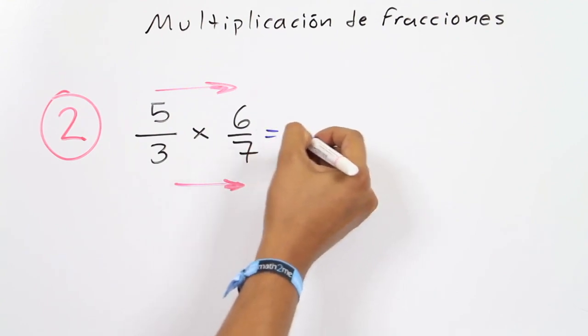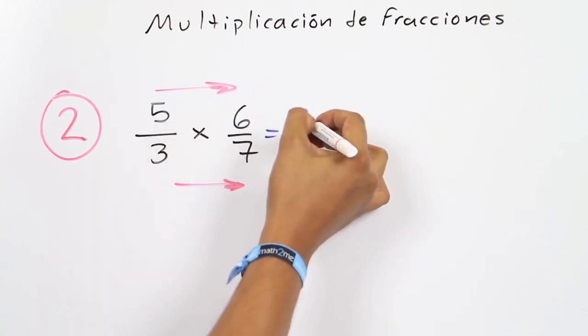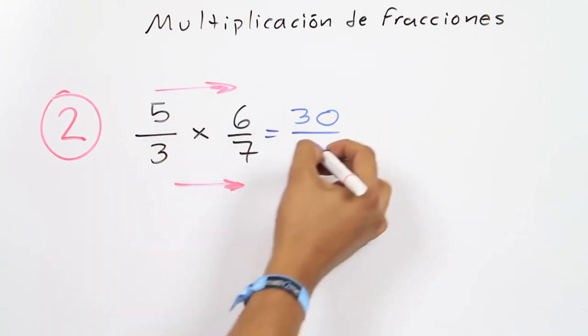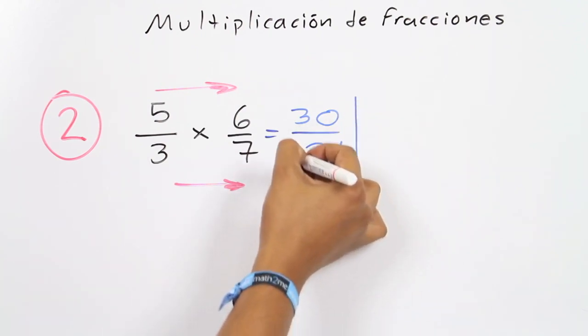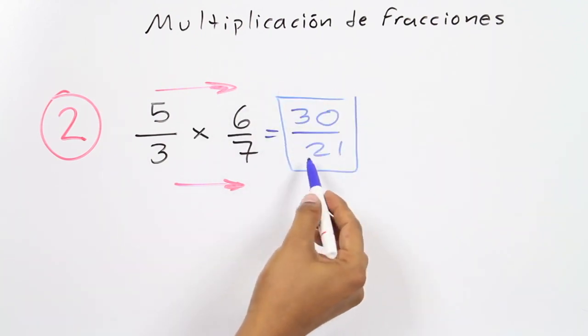In this case, 5 times 6 is 30, 3 times 7 is 21. This is the answer of the multiplication.